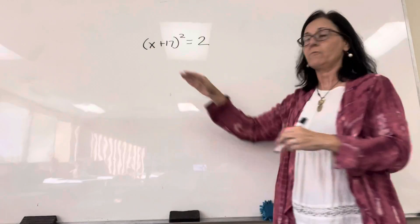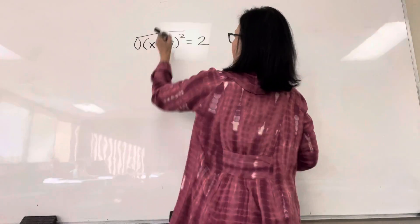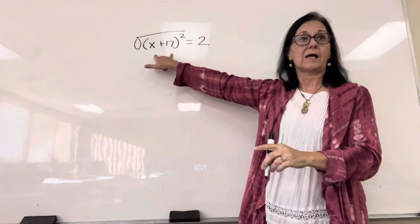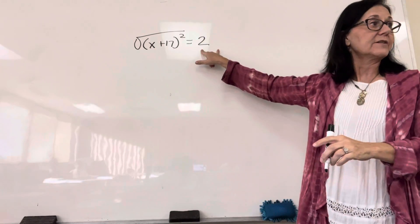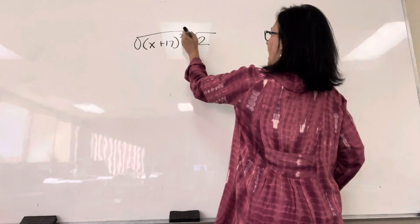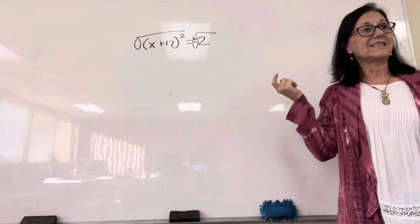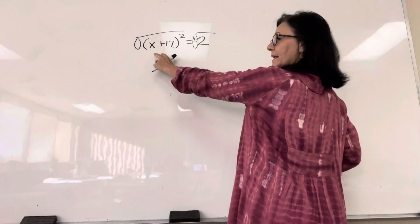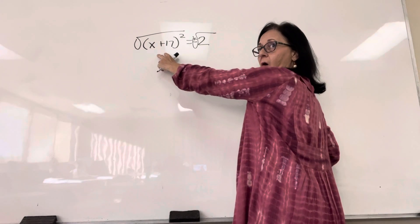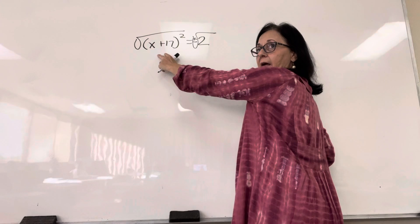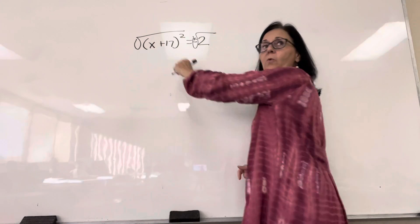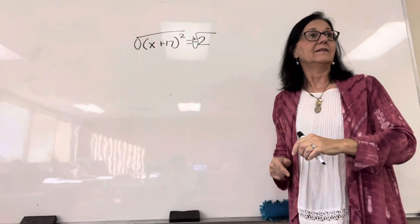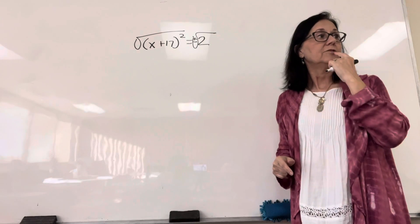I'm going to treat this the same way. We take the square root. Notice, the term squared is isolated on one side of the equal sign. Everything else is on the other side. I take the square root of both sides, always where the x is not, it's positive and negative. What is left on this side of the equal sign? What's the square root of something squared? It's just x plus 17. Do you understand that?